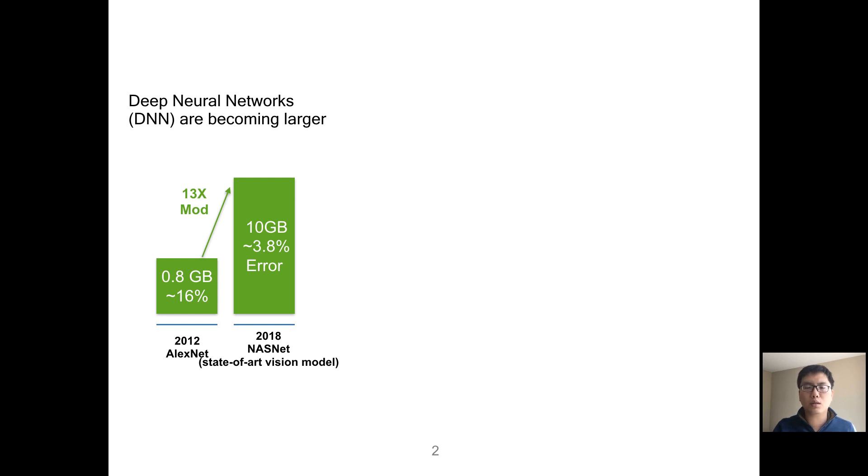Compared to the first well-known DNN model AlexNet proposed in 2012, models now are much larger. For example, the state-of-the-art VG model Neural Architecture Search Network requires around 10GB, while AlexNet requires only 0.8GB. It's 13x more memory requirement.